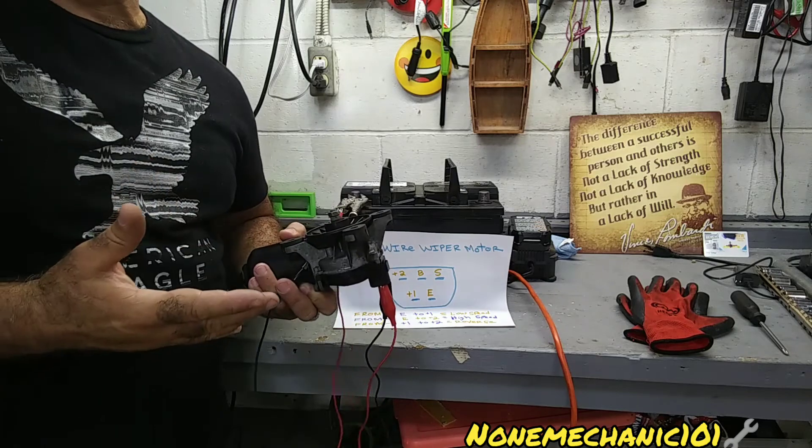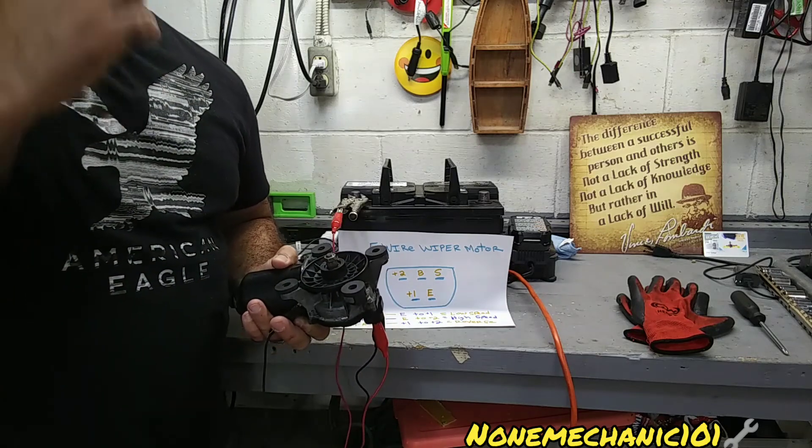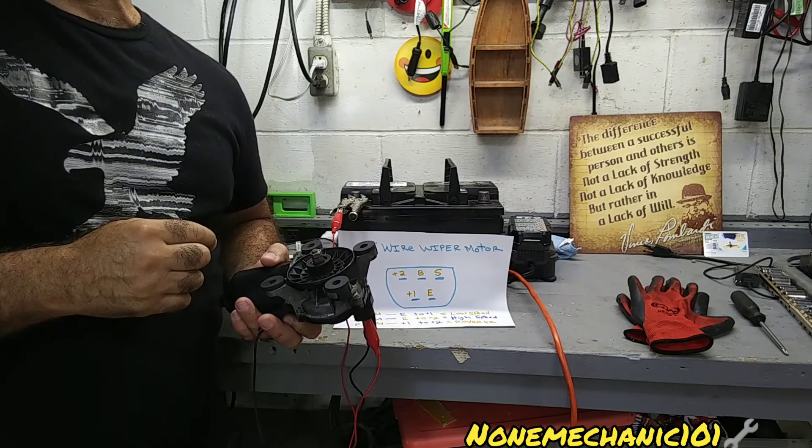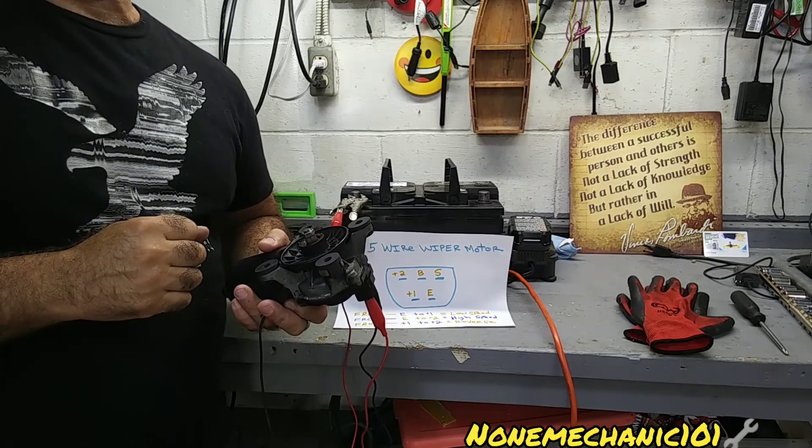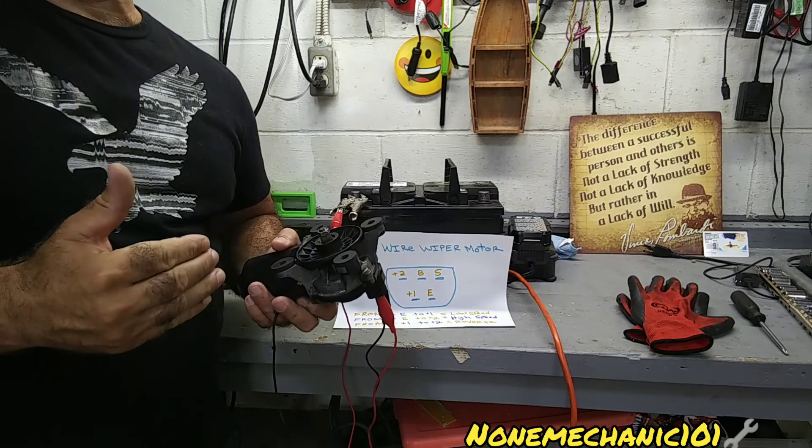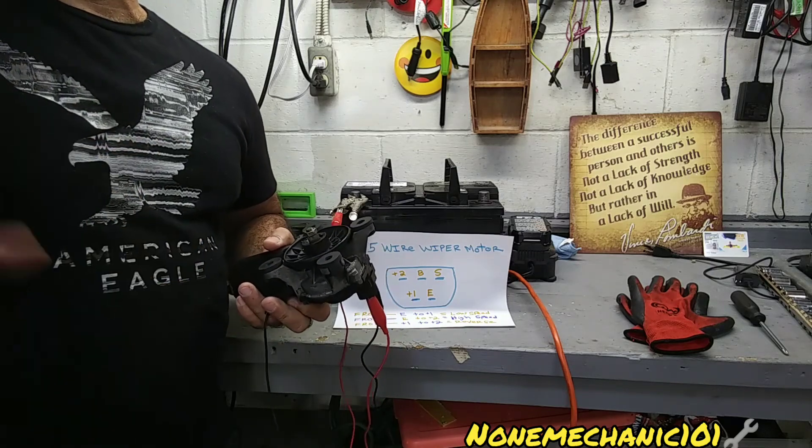This is the way you check a five-wire wiper motor. This is from the Toyota. So once again, this is 9mechanic. If you have any comments or questions, please post them down below or contact me at 9mechanic101@yahoo.com. Remember, if 9mechanic can do it, you can do it. Later.